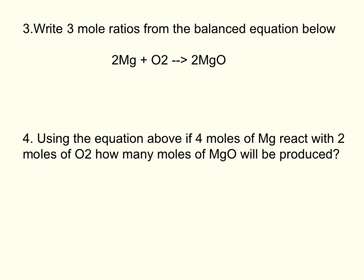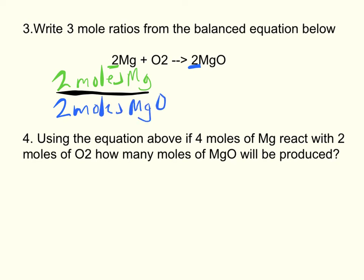For number three, any three mole ratios, it doesn't matter. Here's an example of one that would work: two moles of Mg over two moles of MgO. If you used O2, the coefficient you would have to have would be a one.